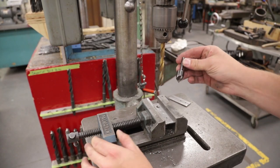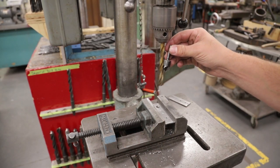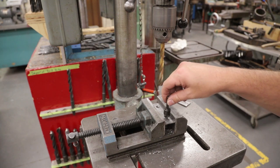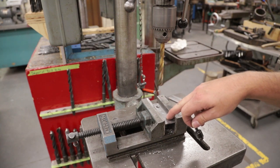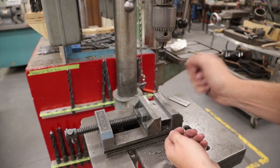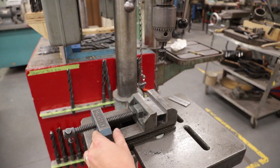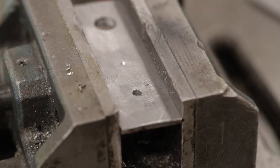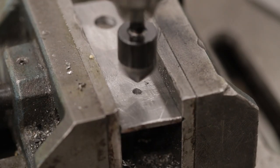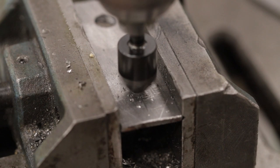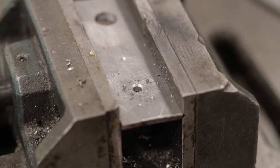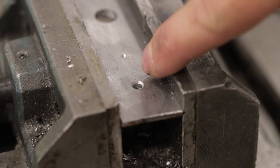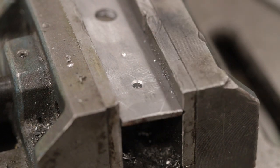You can do this step now or a little bit later, but we can use a countersink to countersink one side of this hole right here. This is going to allow the rivet that when we smash it to have a little bit more bite. Line this up. And that's it, just a very small countersink there.